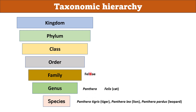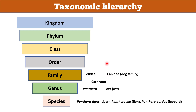Certain similar families come in the same order. Family Felidae and family Canidae are different — Canidae contains dogs — but the members of Felidae and Canidae have some similarities, hence they come in the same order Carnivora.